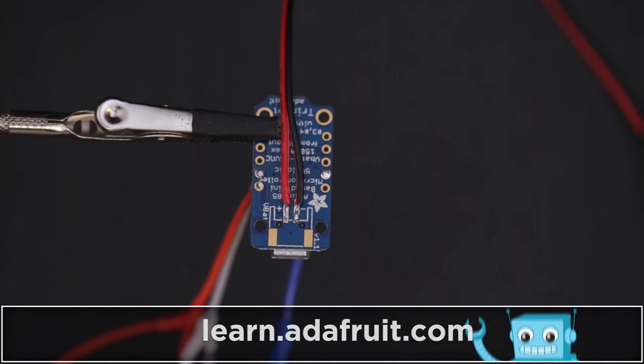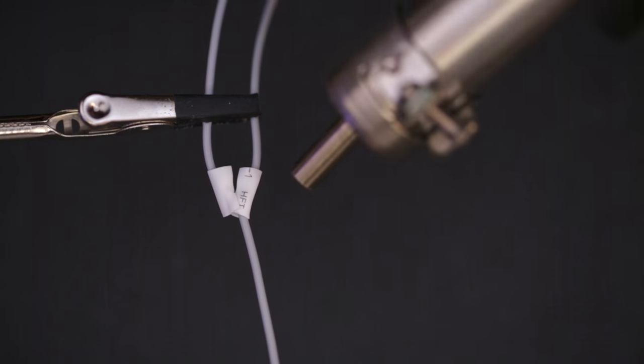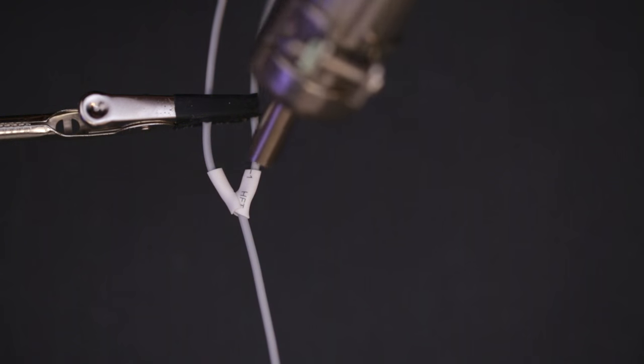We can connect both NeoPixel rings to each other by building a Y cable. This is going to split the connections for each ear. To insulate the exposed wires we'll use heat shrink tubing.